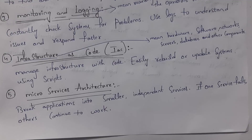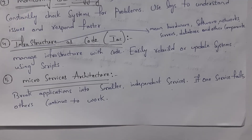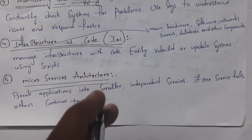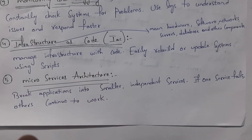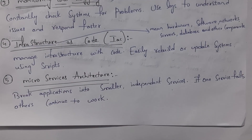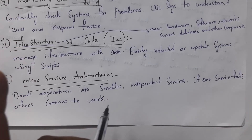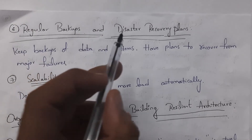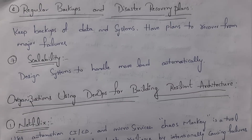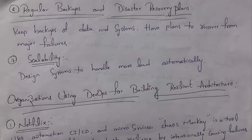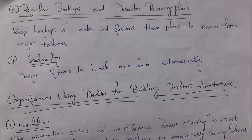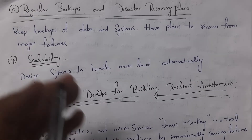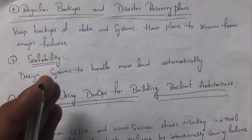Fifth is microservices architecture — breaking an application into various parts based on services. Instead of storing complete code in one place, the application is broken into various parts based on services, so even if one service fails, the remaining services will continue to work. Sixth is regular backups and disaster recovery plans. Backup means storing multiple copies of data so that even if data loss occurs, we can easily restore the data. We also need to prepare various plans to recover from major failures. Seventh is scalability — designing a system that will handle high load automatically.